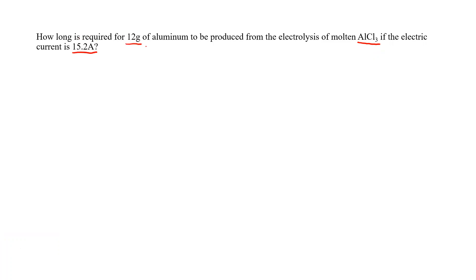So we have 12 grams of aluminum. We have a time interval or we're asked for a time interval. We're given an amperage. So we know that 15.2 amps is the same as 15.2 coulombs per second.